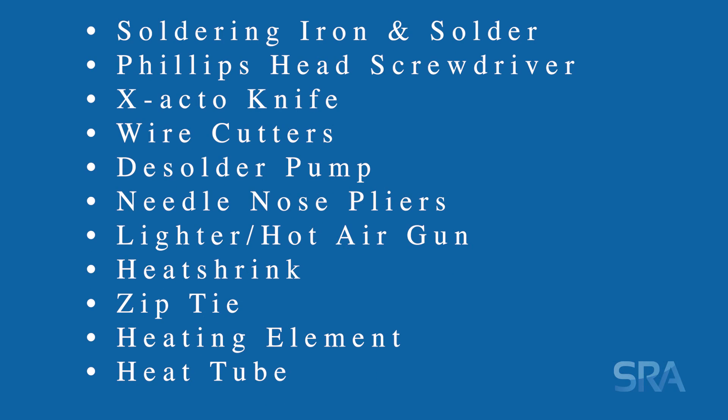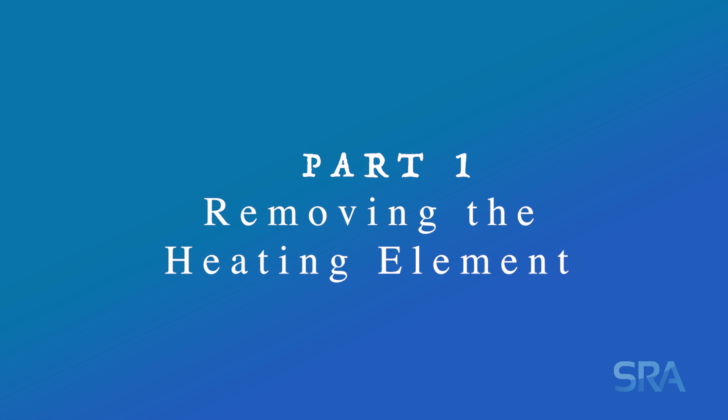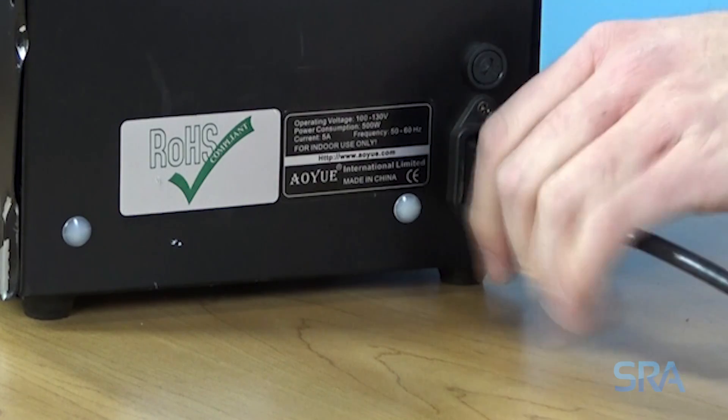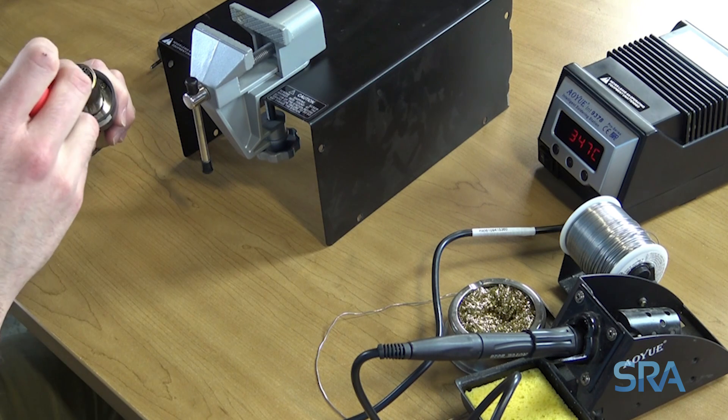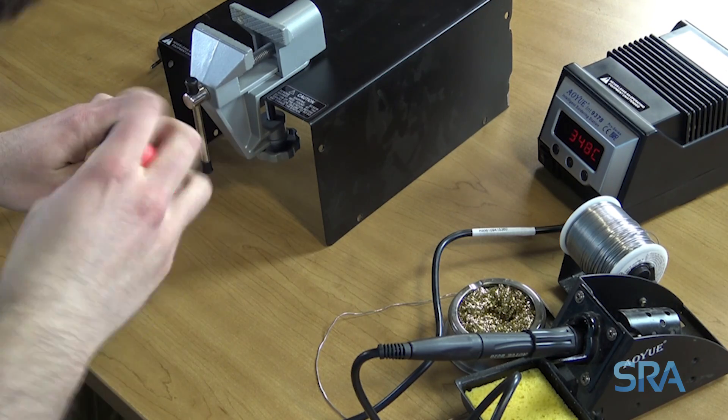Here's a quick overview of the tools you need for this job. For safety, unplug the power from the unit. Start by removing the three screws securing the heating tube.